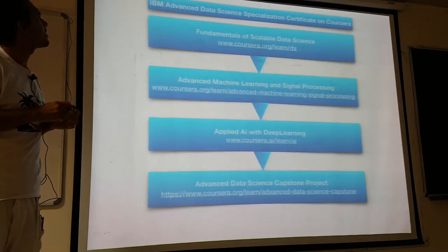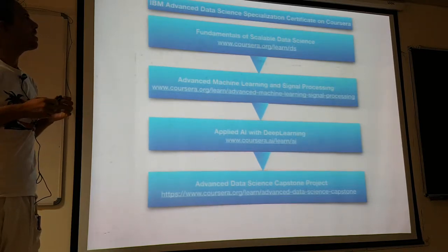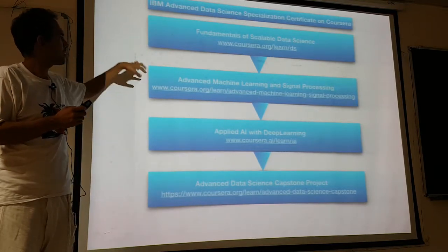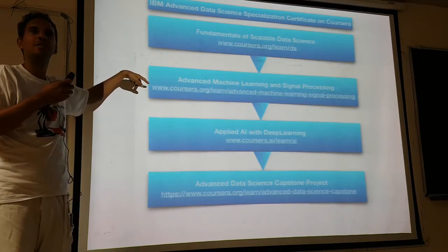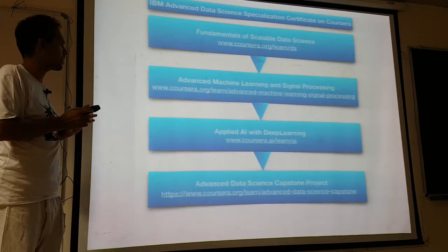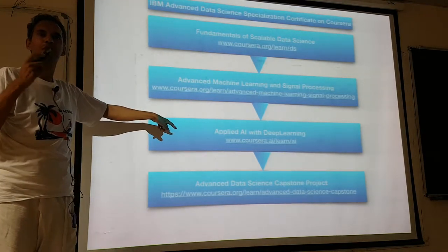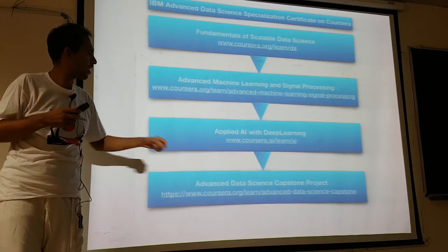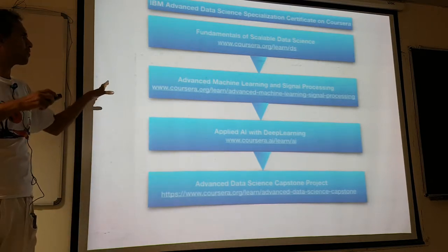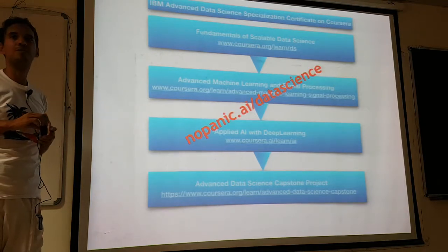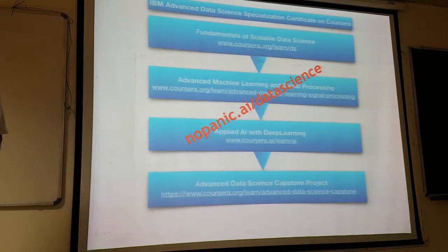These are the courses being taught: the IBM Advanced Data Science Specialization on Coursera, which is four courses. The first is fundamentals, the second is Advanced Machine Learning and Signal Processing — teaching how to scale state-of-the-art machine learning algorithms on clusters. There's a project requiring you to finalize a data science project end to end. There's a free audit-only mode, but without a certificate.